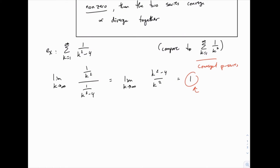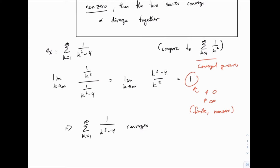The crucial piece here is that this limit is not zero and not infinity — it's finite and nonzero — which means the limit comparison test does apply. If we had gotten zero or infinity, the test would break down and we'd need another approach. Because it's finite and nonzero, we know these two series do the same thing. And since we know 1/k² converges, we can conclude that 1/(k²-4) also converges. That's how the limit comparison test applies: we need a similar series whose answer we know, and we need this limit to be finite and nonzero.